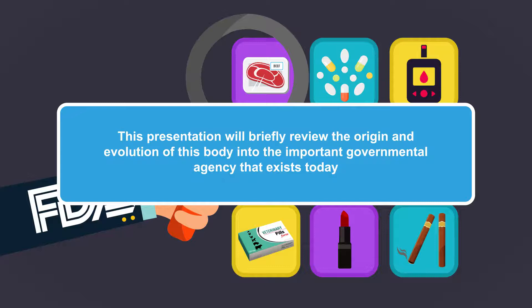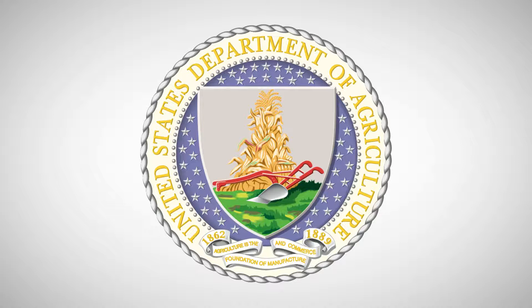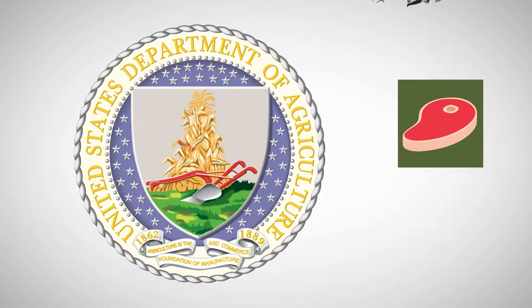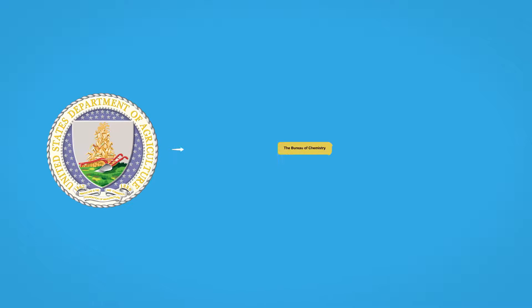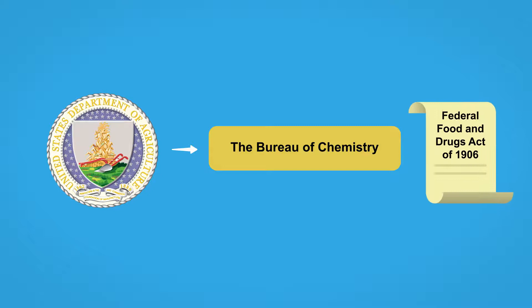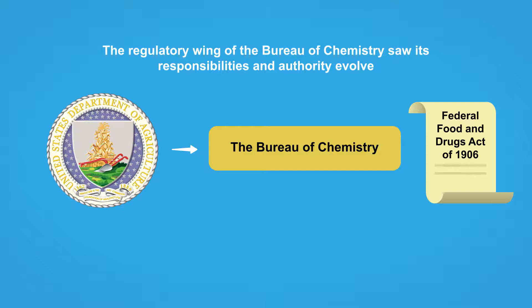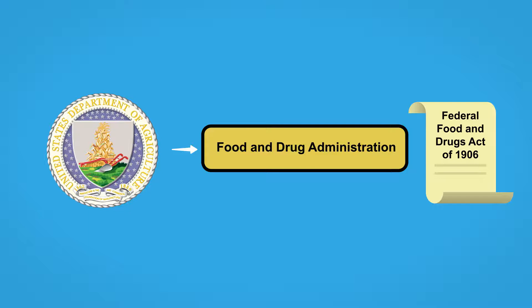This presentation will briefly review the origin and evolution of this body into the important governmental agency that exists today. The Department of Agriculture was established in 1862 by President Abraham Lincoln and immediately set out to address a myriad of issues related to food production and safety. As it became apparent that the problem of food adulteration was becoming more widespread, a special division of the Department of Agriculture, the Bureau of Chemistry, was charged with enforcing a groundbreaking statute known as the Federal Food and Drugs Act of 1906. The regulatory wing of the Bureau of Chemistry saw its responsibilities and authority evolve, and it ultimately became known as the Food and Drug Administration.